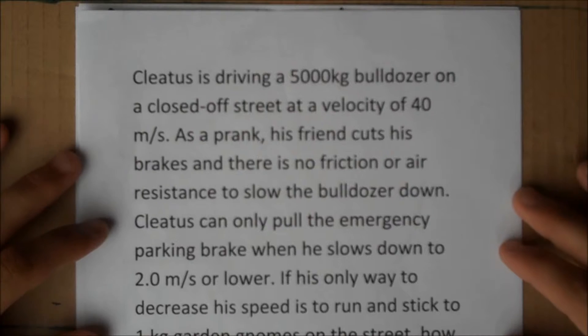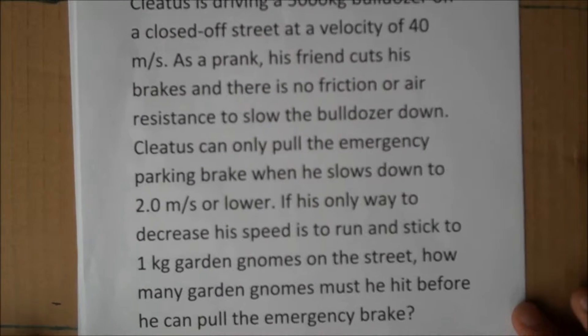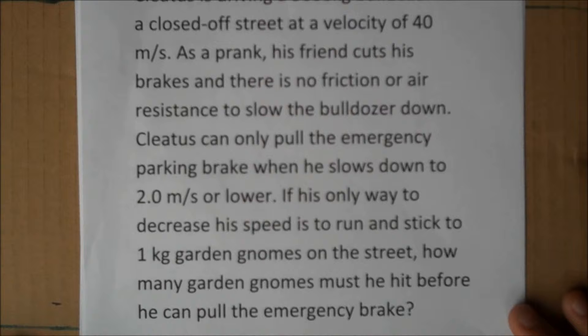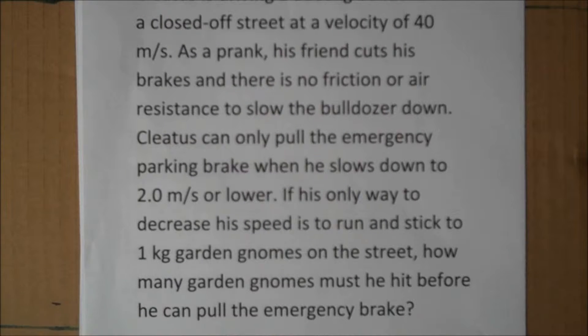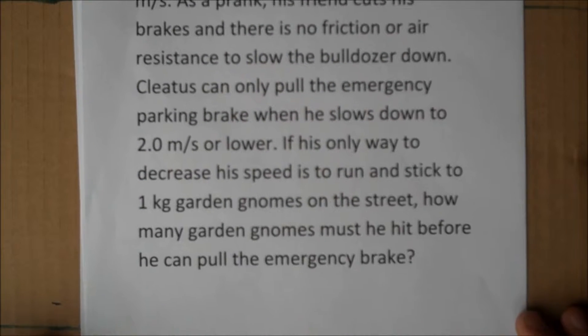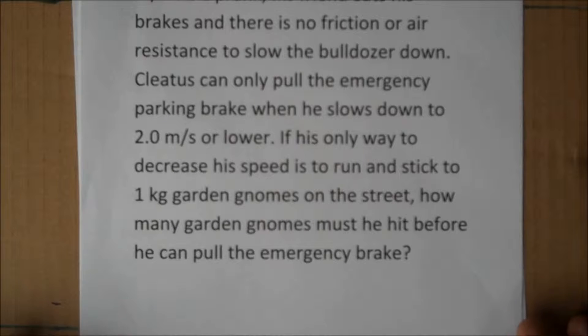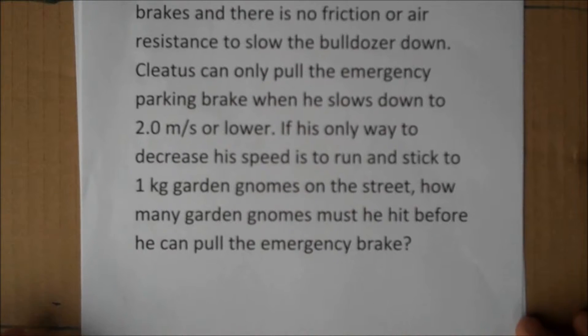Cleatus can only pull the emergency parking brake when he slows down to a speed of 2 meters per second or lower. If his only way to decrease his speed is to run and stick to 1 kg garden gnomes on the street, how many garden gnomes must he hit before he can pull the emergency brake?